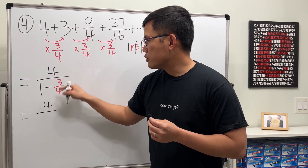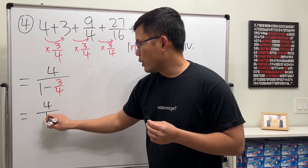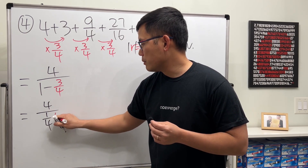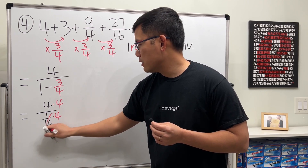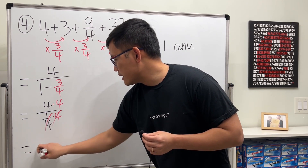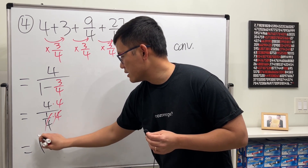We apply the formula: first term four over one minus three over four. One minus three over four is one over four, so we get four divided by one over four, which equals 16.